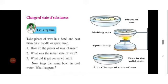The piece of wax changes due to heat provided on the bowl. What was the initial state of wax? The wax was in the solid state. What did it get converted into? Due to heat, it gets converted into the liquid state.